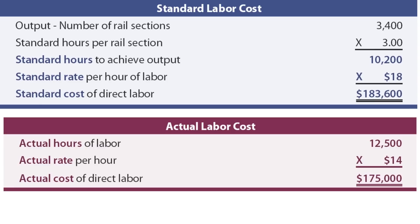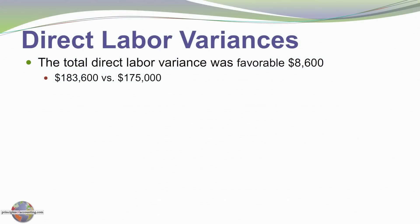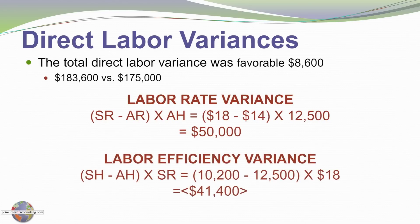For Blue Rail's labor example: Blue Rail produced 3,400 sections of output. They should have used three hours per section of welding time, so standard hours should have been 10,200 hours at a standard rate of $18 per hour, giving a standard cost of $183,600. Actually, they spent only $175,000. Breaking this out: the labor rate variance is a favorable $50,000 — that's the $4 per hour difference between standard and actual labor rate times 12,500 actual hours worked. However, efficiency was poor: they used 12,500 hours instead of the standard 10,200, times the $18 standard rate, giving an unfavorable labor efficiency variance of $41,400.